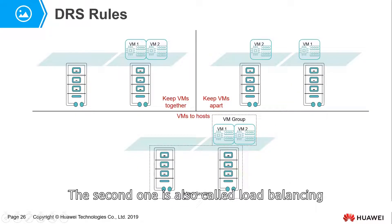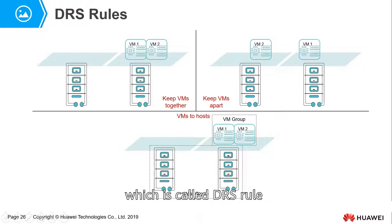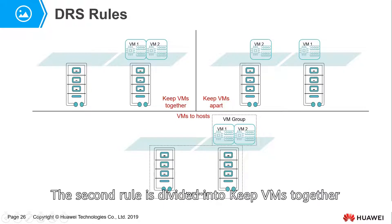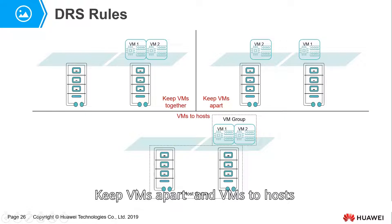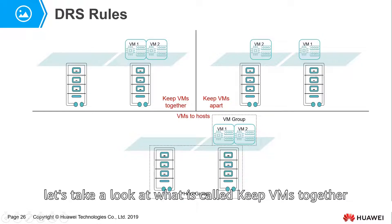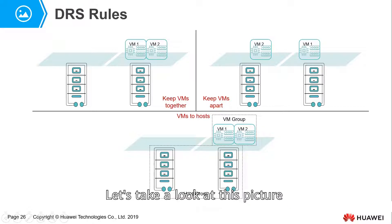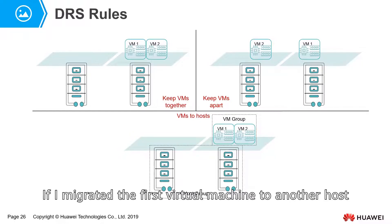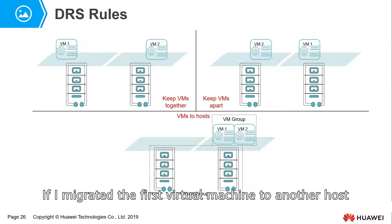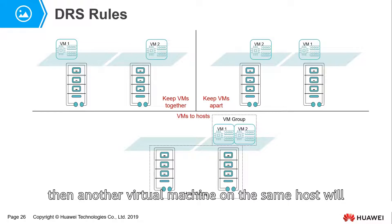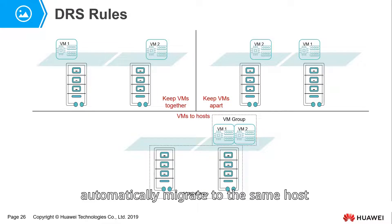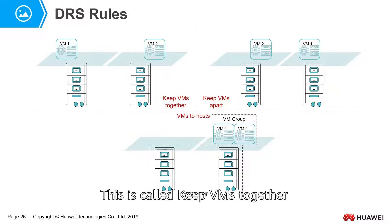The second load balancing feature is called DRS rules. DRS rules are divided into: keep VMs together, keep VMs apart, and VMs to host. First, let's look at keep VMs together. Looking at the diagram: if I migrate one virtual machine to another host, another virtual machine on the same original host will automatically migrate to that same host. This is called keep VMs together.